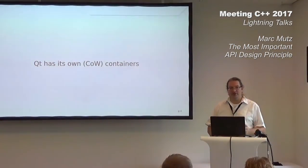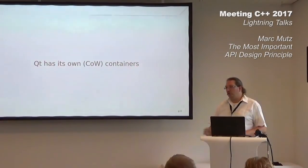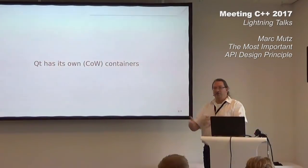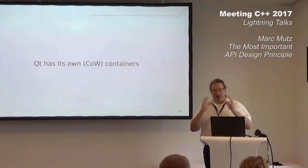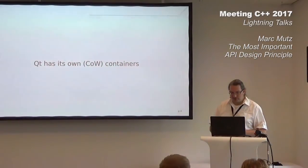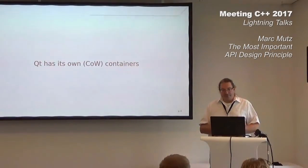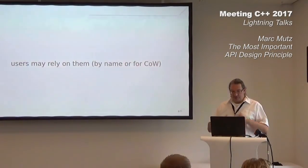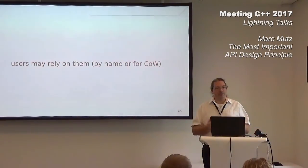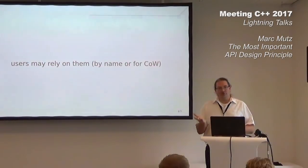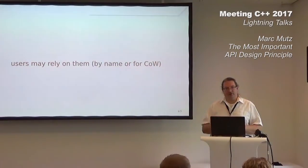Qt has its own containers and they are copy-on-write (COW). They are used all over the place — in the painter API, in all the widgets, everywhere. You can't escape them. Users at this point in time may have come to rely on them by name — QVector, QList — and maybe even depend on the fact that they are copy-on-write in their own code.